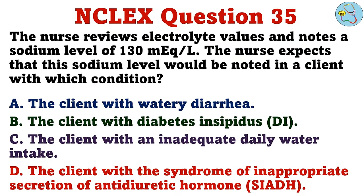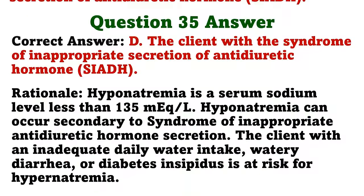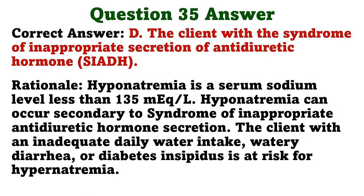The nurse reviews electrolyte values and notes a sodium level of 130 mEq/L. The nurse expects that this sodium level would be noted in a client with which condition? A. The client with watery diarrhea. B. The client with diabetes insipidus. C. The client with an inadequate daily water intake. D. The client with the syndrome of inappropriate secretion of antidiuretic hormone. The correct answer is D. Hyponatremia is a serum sodium level less than 135 mEq/L. Hyponatremia can occur secondary to syndrome of inappropriate antidiuretic hormone secretion. The client with an inadequate daily water intake, watery diarrhea, or diabetes insipidus is at risk for hypernatremia.